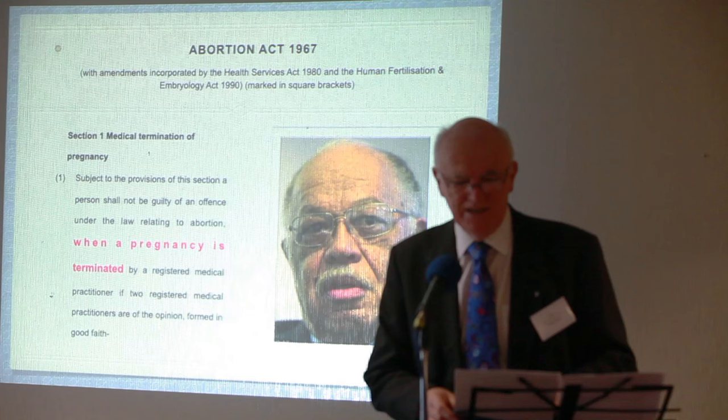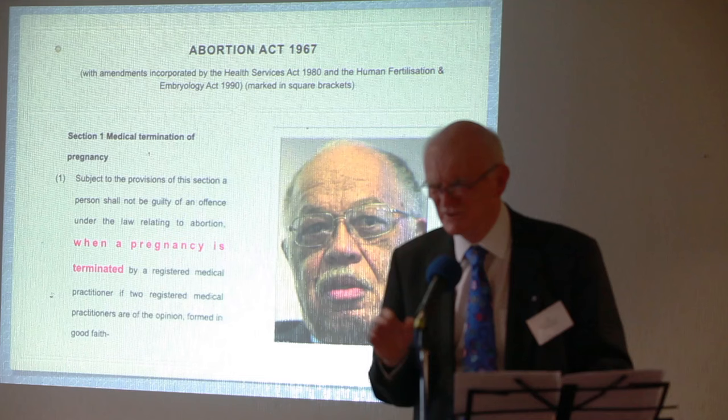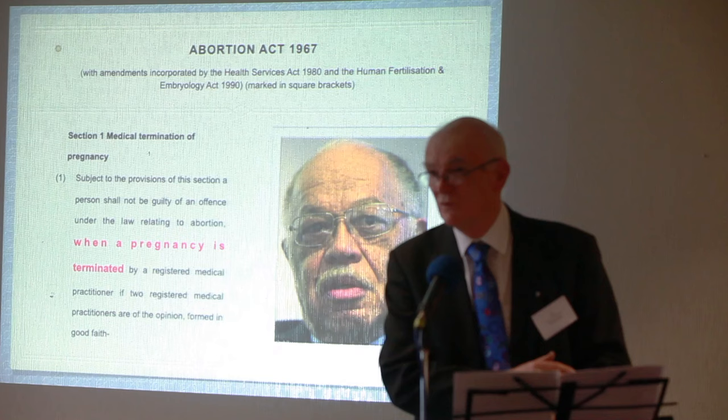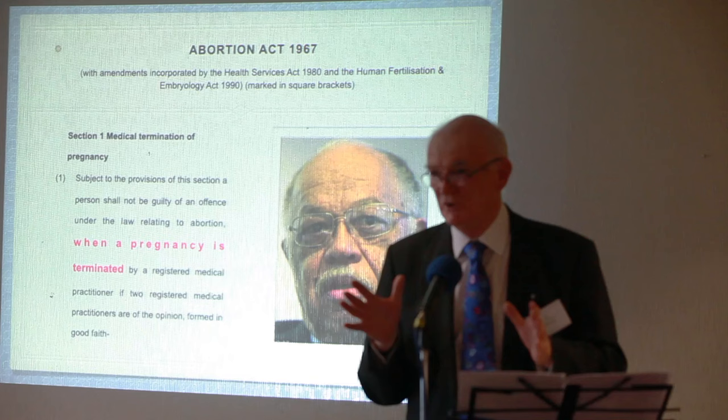Even so, the Abortion Act in 1967 didn't get rid of the idea of 'child.' They just could not get rid of it. If you look at Section 1(1)(d), it talks about 'a substantial risk that if the child were born' — so it's coming out into the open there. There was no way they could find to hide that. So we're talking about a human child.